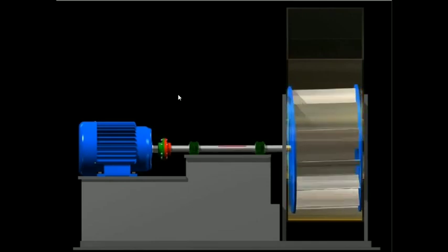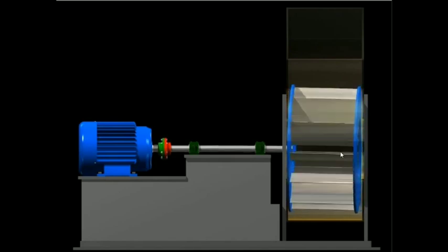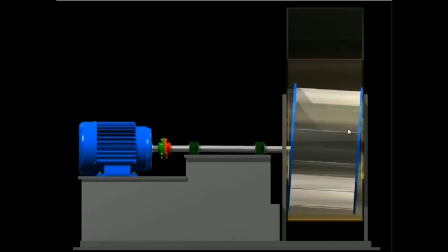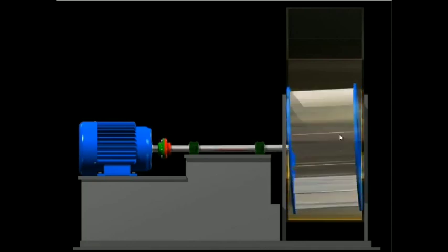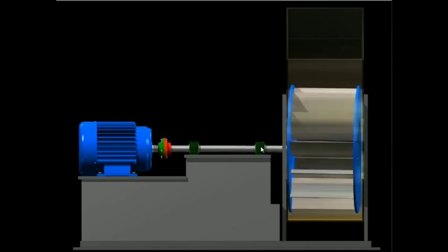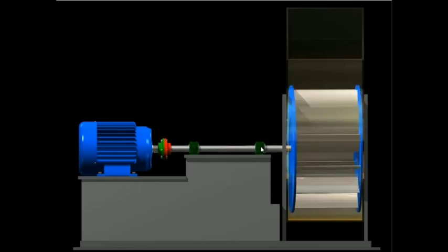In the case of overhung unbalance, we still get the radial motion. We still get that circular motion. What I'm highlighting here is that we also get a rocking motion, and that causes axial vibration. So the difference is we expect to see high vertical and horizontal vibration and high axial.